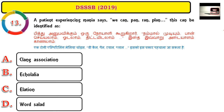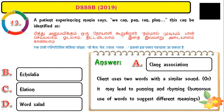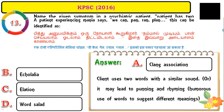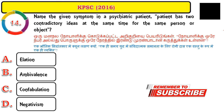Question number thirteen: a patient experiencing mania says words like 'pan, ran, plan.' This can be identified as clang association — one of the major symptoms in mania. The client pronounces two words with a similar sound, leading to punning and rhyming formation of words.